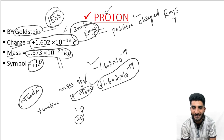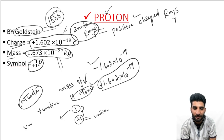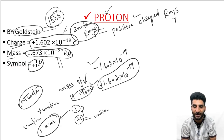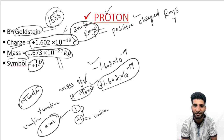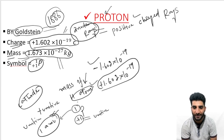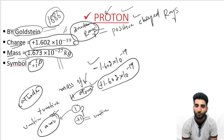The subscript 1 represents one unit positive charge, and the superscript 1 represents one atomic mass unit — the same as the mass of the hydrogen atom. The unit positive charge is the smallest positive charge that exists in nature, and we simply call this one atomic mass unit.